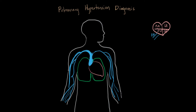The right atrium receives venous blood from the body. So what we can do is access this whole thing from the veins — insert a catheter into a big vein, usually one of the veins in the arm or up near the shoulder and neck. Wherever it is, the point is to put this catheter into the vein.